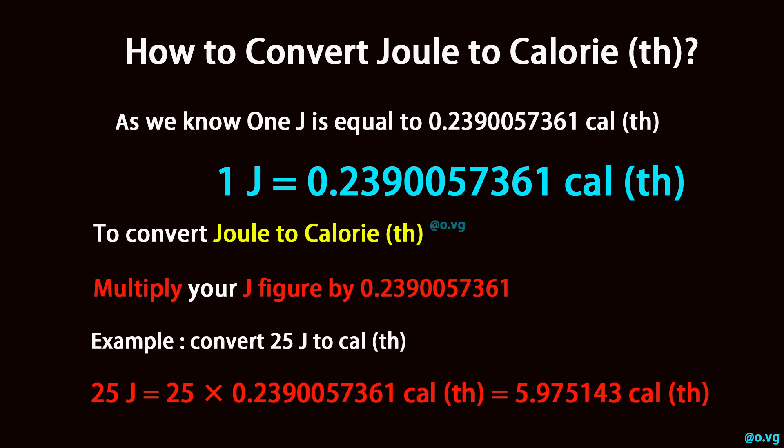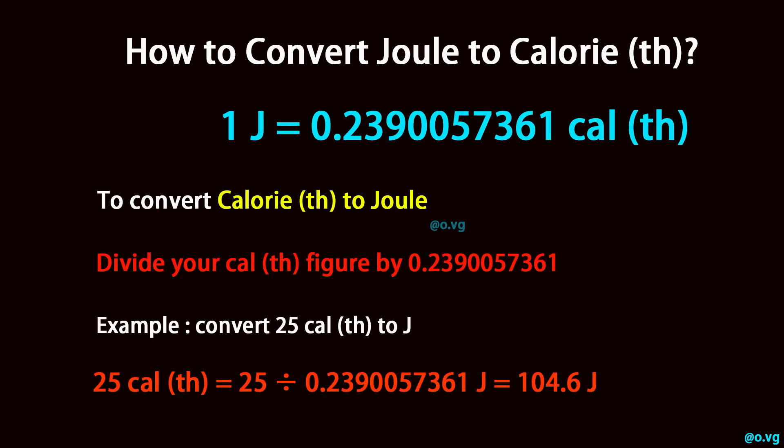To convert Calorie to Joule, divide your Calorie figure by 0.2390057361. Example: Convert 25 Calorie to Joule. 25 Calorie equals 25 divided by 0.2390057361 Joule, which equals 104.6 Joule.